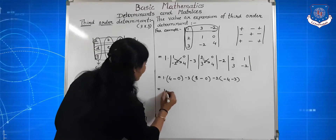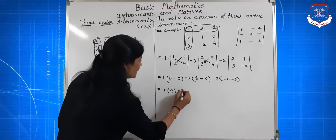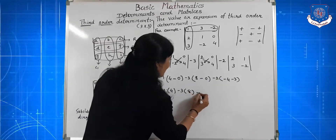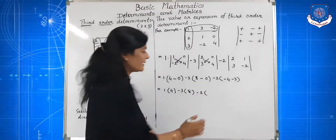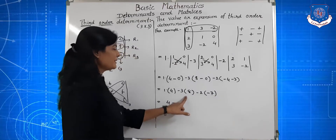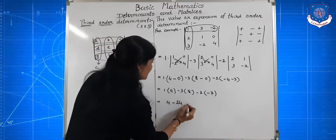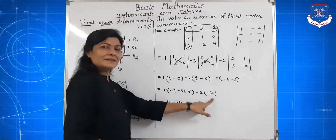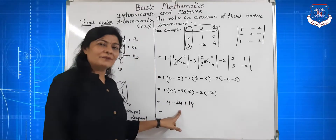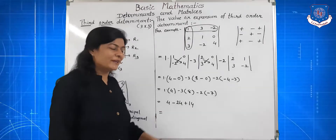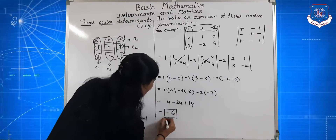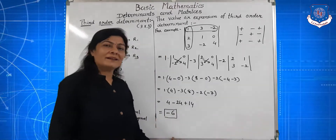Equal to 1 into (4 minus 0) = 4, minus 3 into (8 minus 0) = 8, minus 2 into (minus 4 minus 3) = minus 7. So: 4 minus 3 into 8 = 24, plus 14. Equal to 4 minus 24 plus 14, which gives minus 20 plus 14, so minus 6.